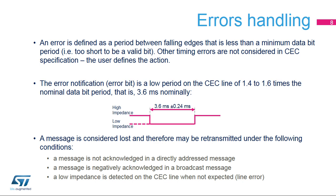If a BTE or BPE error is detected, the CEC peripheral notifies the other followers, and primarily the initiator, by generating an error bit — a low period on the CEC line of 1.4 to 1.6 times the nominal data bit period, that is, 3.6 milliseconds nominally. A message is considered lost and may be retransmitted if it is not acknowledged in a directly addressed message, negatively acknowledged in a broadcast message, or if a low impedance is detected on the CEC line when not expected — a line error.